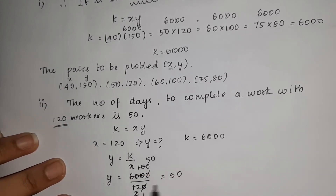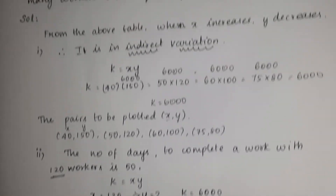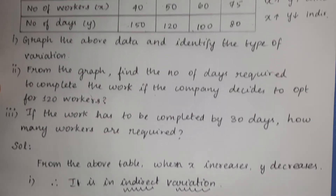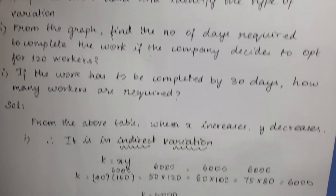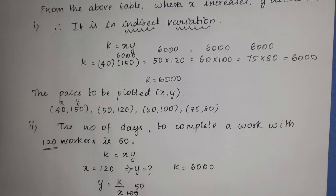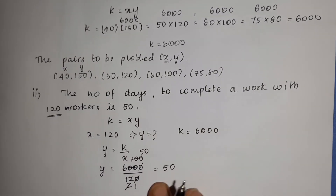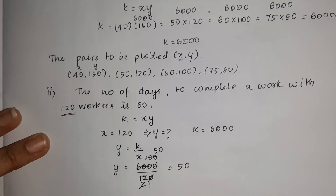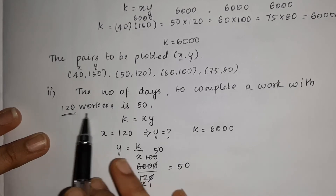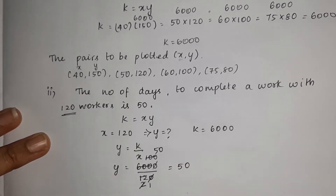The number of days is 50. So the answer is correct. If you look at the same graph, you can confirm that 120 workers take 50 days to complete the work.